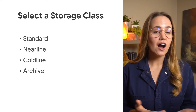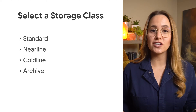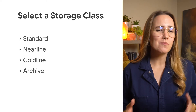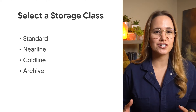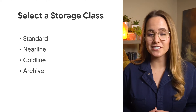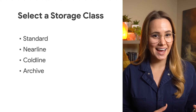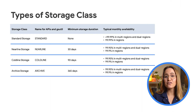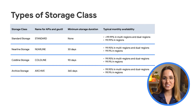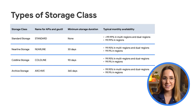Cloud Storage has four different storage classes. All offer low latency and high durability, but they vary based on their availability and minimum storage durations, along with the pricing for storage and access. Data that will be served at a high rate with high availability should use the standard storage class, which provides the best availability with the trade-off of a slightly higher price.